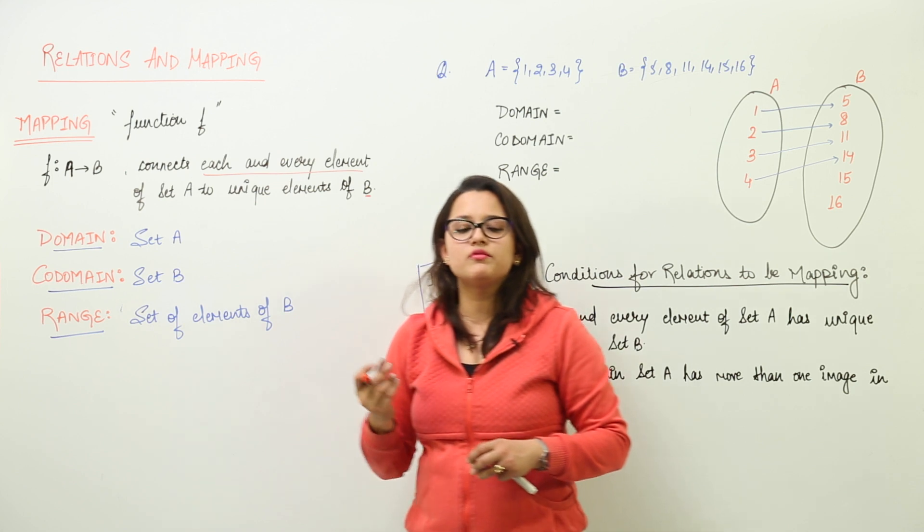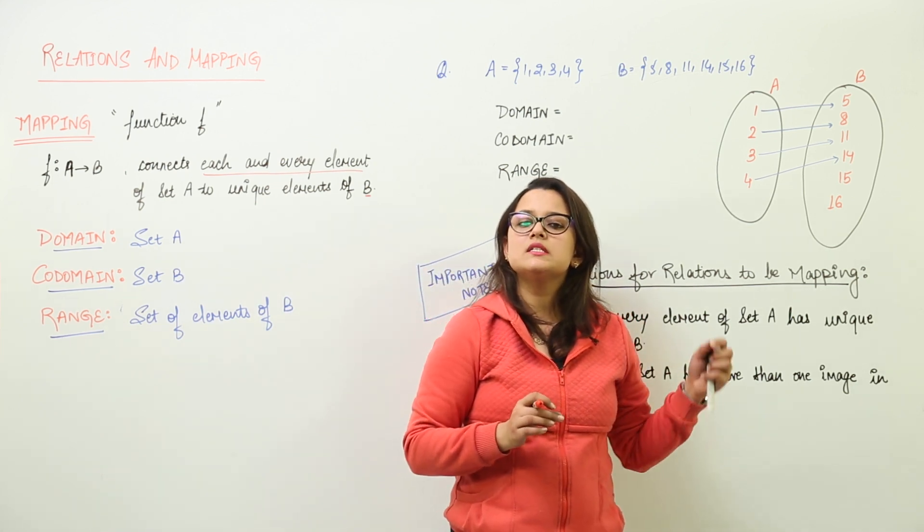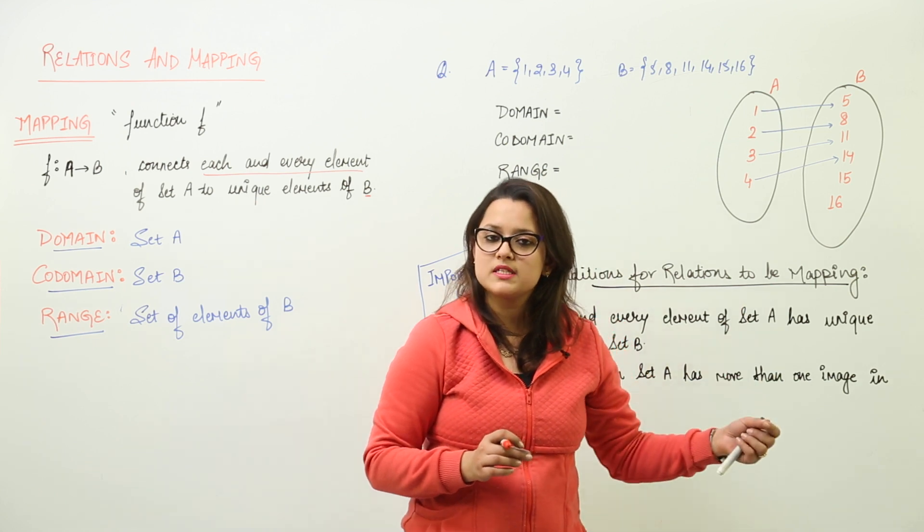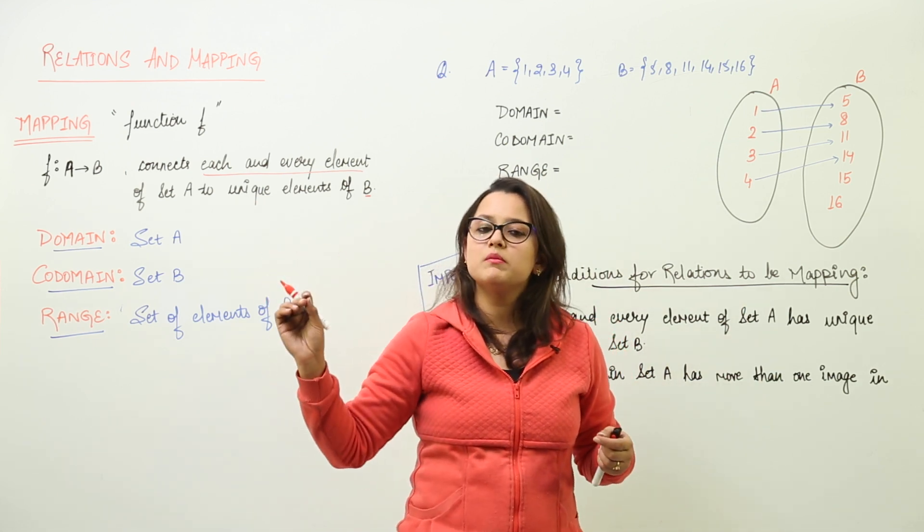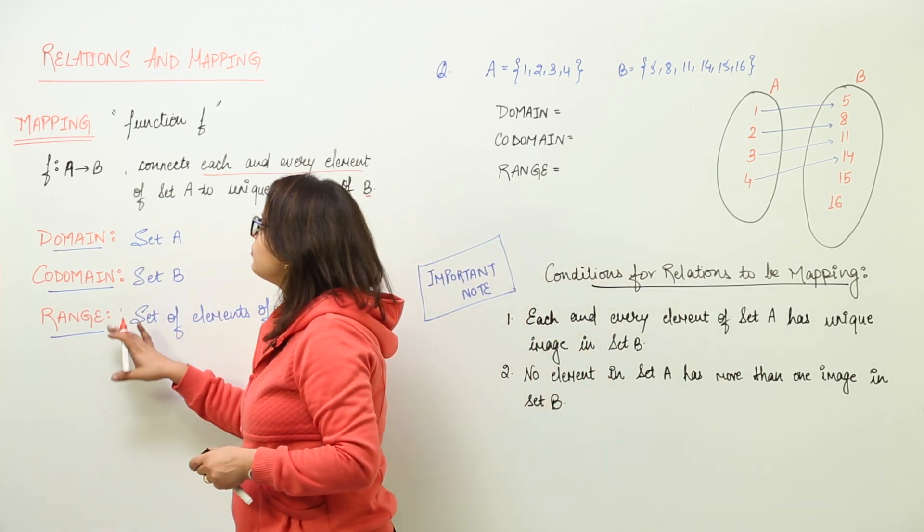Mapping is nothing but a function which is going to connect all the elements, that is each and every element of one set with the unique elements of the next set. So, what is domain, co-domain and range here?